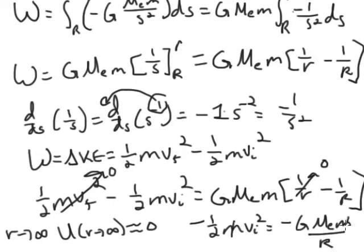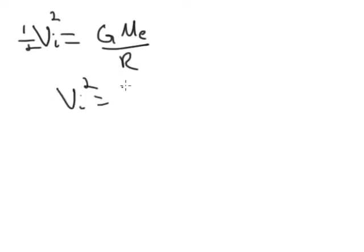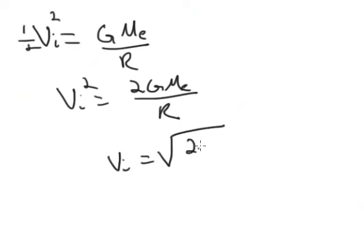We can cancel these m's, cancel the negatives, and then solve for v squared. So we'll get one half vi squared is equal to G Me over big R, vi squared equals 2G Me over big R, and then solving for vi we're going to get the square root of 2G Me over big R.